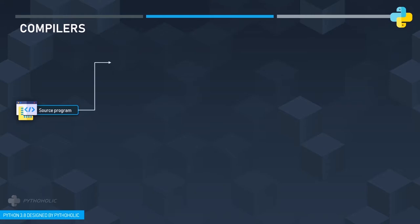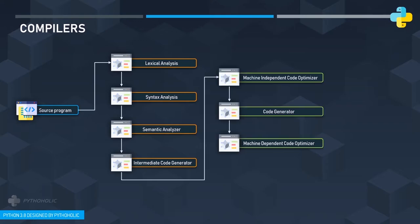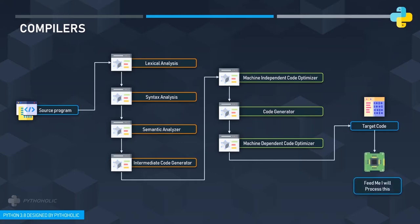The compiler transforms the source program into individual units called lexemes using lexical analysis, then analyzes the syntax to ensure it follows the language's rules. It is then transformed into a binary tree data structure called the Abstract Syntax Tree (AST) using the semantic analyzer, after which intermediate code is generated, optimized using a machine-independent code optimizer, and then passed through a machine-dependent code optimizer using the three-address code pattern. Finally, you have the target code — machine-readable instructions — which are fed to the machine to produce output.